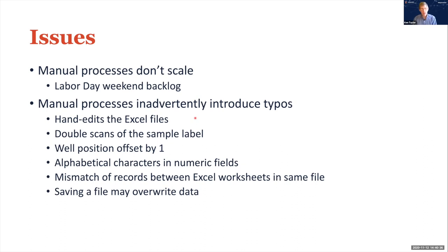Another problem with the manual process is that so many people are touching these files, introducing all sorts of typos. People are hand-editing the Excel files, copying positives out of the initial file into another. You have to scan the label on the test tube, and that scan could easily become a duplicate scan if you squeeze the trigger twice — now you have two records, which offsets the well position in the tray by one. Leaning on the keyboard introduces alphabetical characters into numeric fields. All sorts of record mismatches between Excel worksheets and data overwriting when saving files.